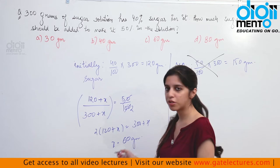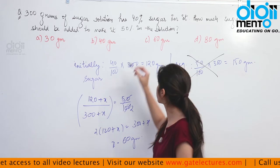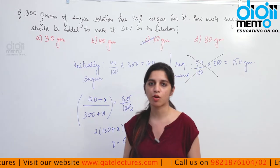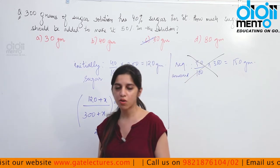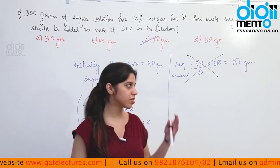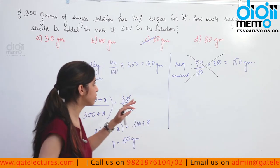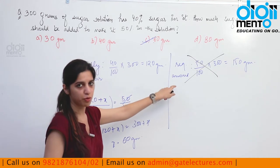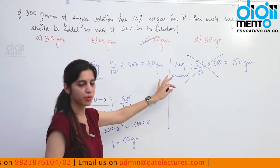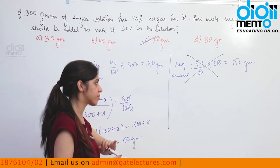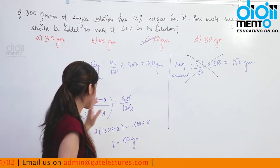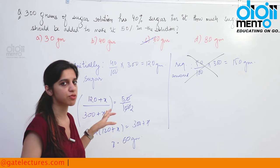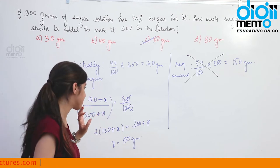So how much sugar do you need to add? You need to add 60 grams of sugar. Option C is the correct answer. We took this question specifically to highlight this approach — the wrong approach gives you 30 grams and you might be tempted by that option, but it is incorrect because adding something to a solution increases the total solution amount.